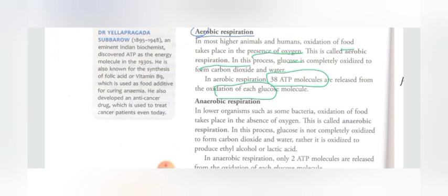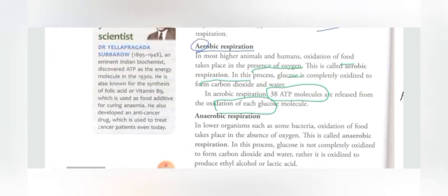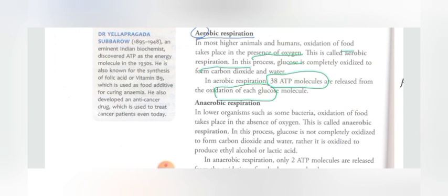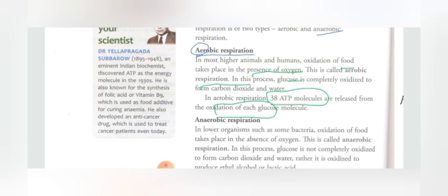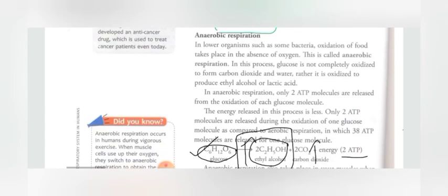Apart from discovering the ATP molecule and synthesizing vitamin B9, Dr. Ella Pragada Subbarao also developed an anti-cancer drug. At a particular period cancer was not curable, but different scientists identified and discovered techniques to overcome this problem. Now cancer can be treated well unless it is in its final stages.